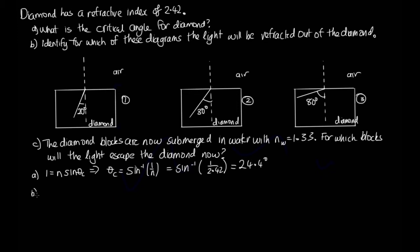So we can then use that to answer part B, where we need to identify for which of these diagrams here the light leaves the prism. So the light will leave the prism if it hits it at an angle less than the critical angle. So diagram one, the angle of incidence is 20 degrees, which is less than 24.4. So yes, it will leave.